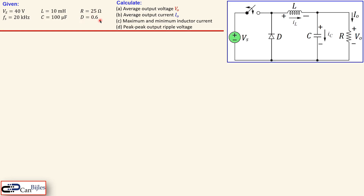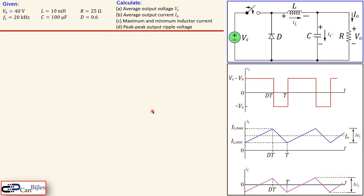We know that Vs is 40 volts and we have a switching frequency of 20 kilohertz, so this switch will be switched at 20 kilohertz. We have an L and a C, the resistor is 25 ohms, and D here is our duty cycle, which in this case is 60 percent or 0.6. Using these values we'd like to calculate the average output voltage, average output current, maximum and minimum inductor current, and the peak-to-peak output ripple voltage.